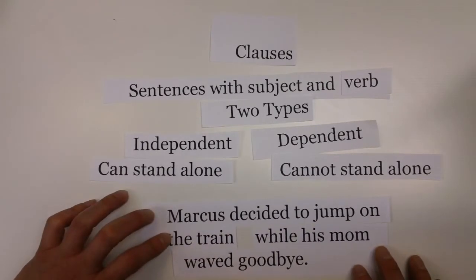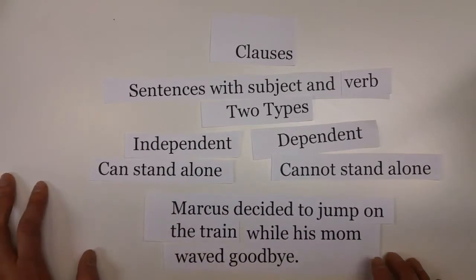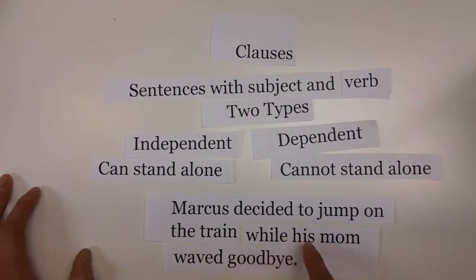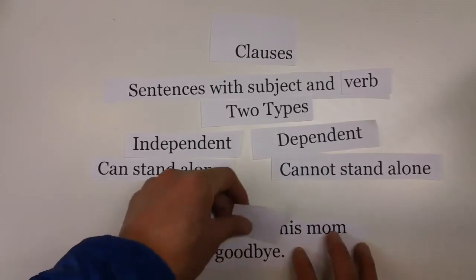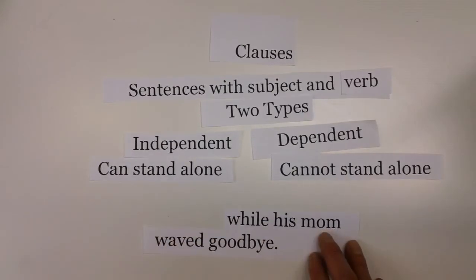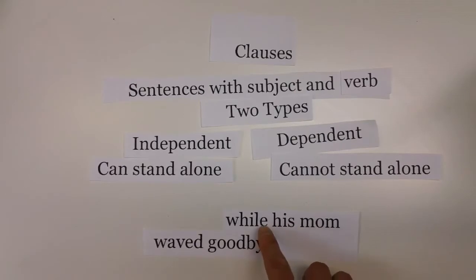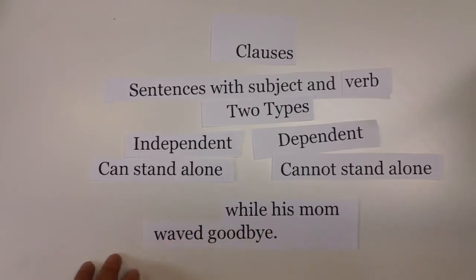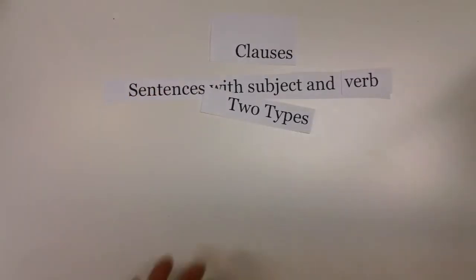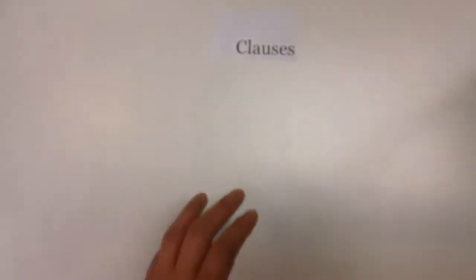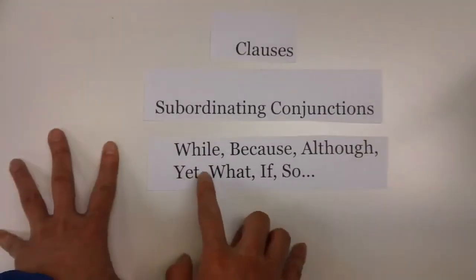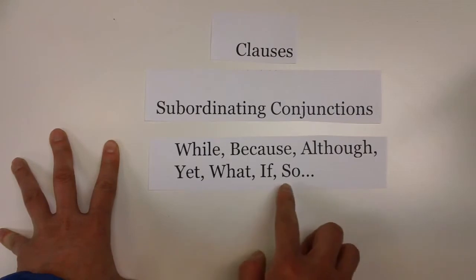Another way of identifying a dependent clause is by subordinating conjunctions like "while." "While" is a subordinating conjunction because if you took away "while," "his mom waved goodbye" would just be an independent clause. Adding "while" makes it a dependent clause. Subordinating conjunctions are words like while, because, although, yet, what, if, and so.